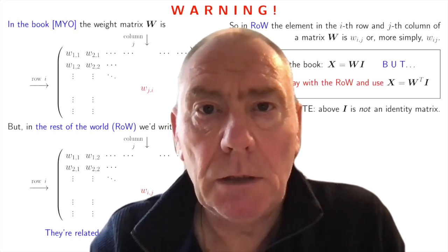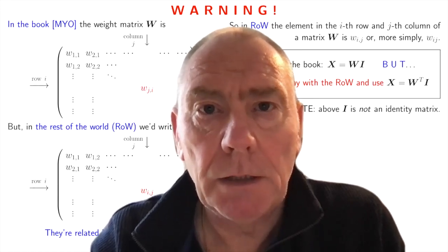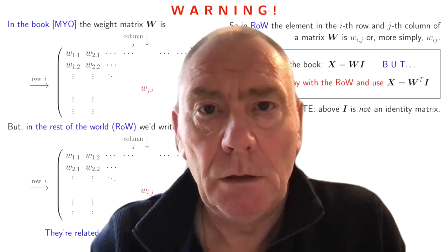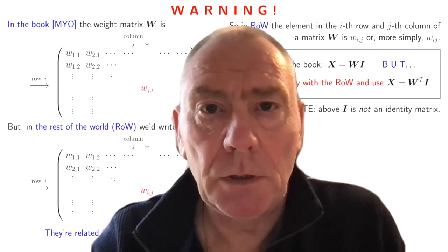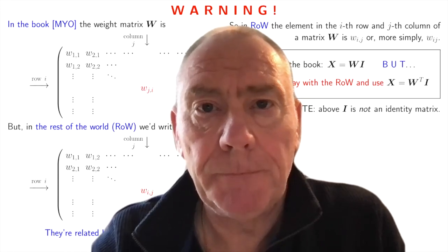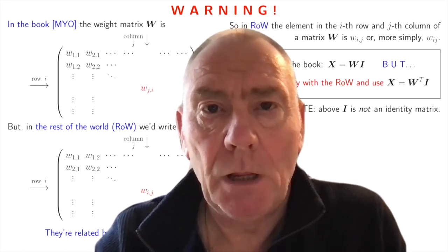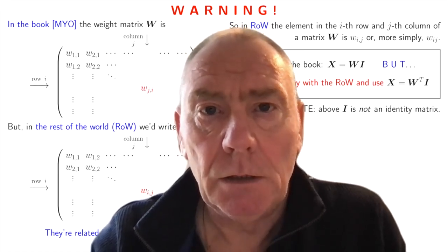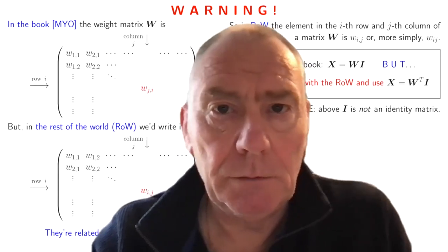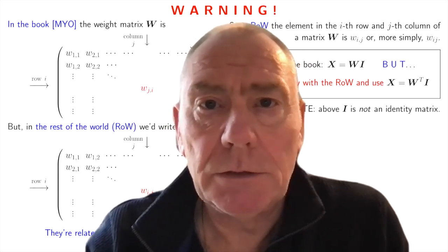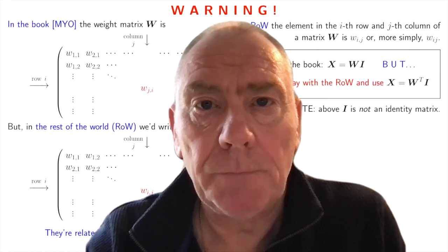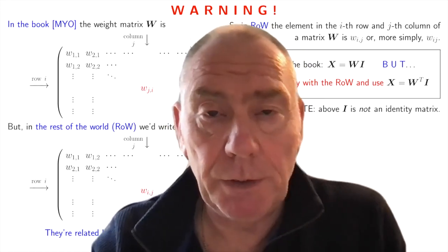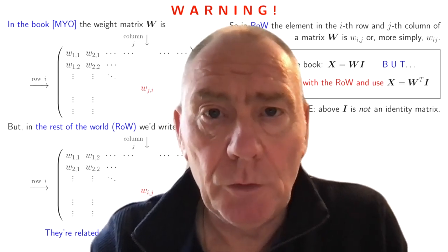Last week, we began writing our code to recognize handwritten digits from the MNIST dataset. We wrote it as a function, put some help documentation at the top, added some error trapping, and loaded in the data, and then we stopped. If your memory of that is a little fuzzy, I'd suggest going back and watching at least the last five minutes of the last lecture. We're going to pick up at the same point, briefly recap what we did, and then move on.